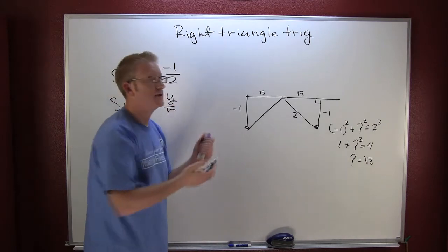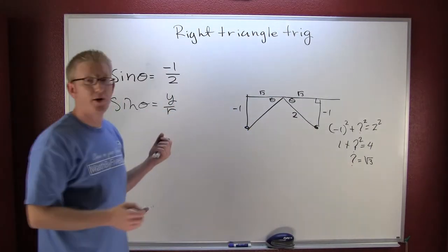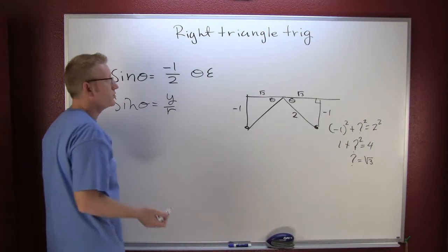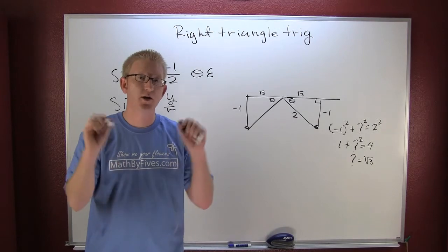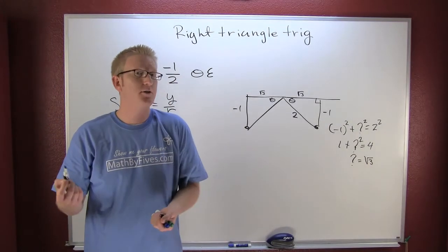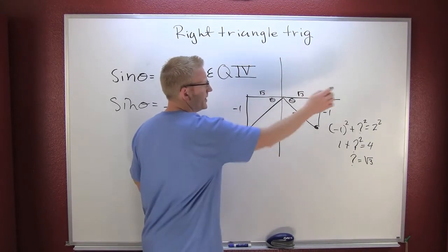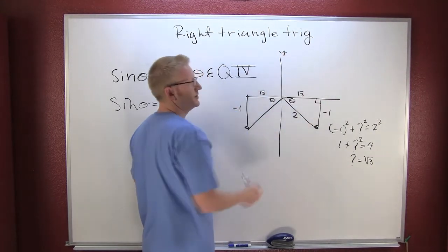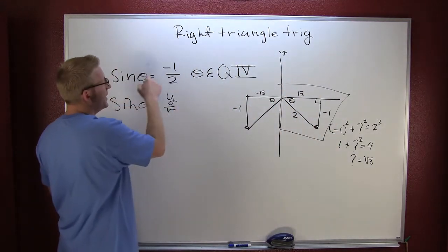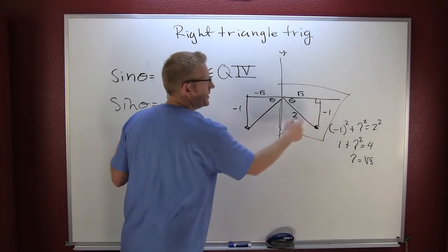We need to determine which one of these triangles we're on, because this is theta and that is also theta in our reference triangles. So let's say theta terminates in quadrant 4. We've ruled out the first two quadrants because in those the sign is going to be positive, but here our sign is negative. This one terminates in quadrant 4, where my x is positive, my y is negative, and this is my r.